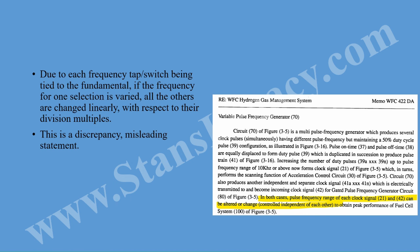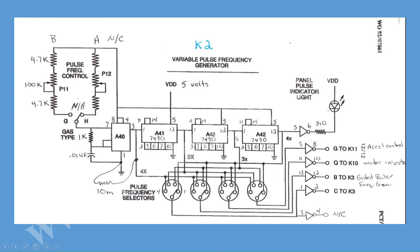One thing we need to note here is Stan's literary reference — highlighted — that the pulse frequency range of each clock signal can be altered or changed independently of each other. This unfortunately is misleading, though I don't believe it's intentional. It is not independently adjustable between all four separate channels due to the fact that they are tied to the fundamental provided by the 555. For example, if we adjust the frequency select via the potentiometer, all channels will also adjust accordingly in proportion. We cannot really adjust each channel independently because they are all tied back to the fundamental provided by the 555. I just wanted to clarify that before moving forward.